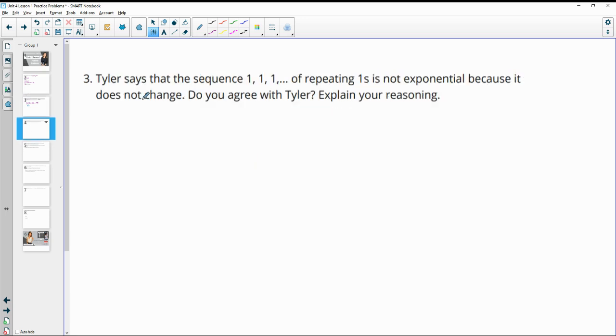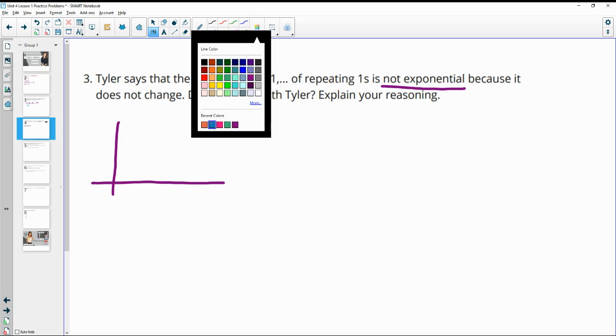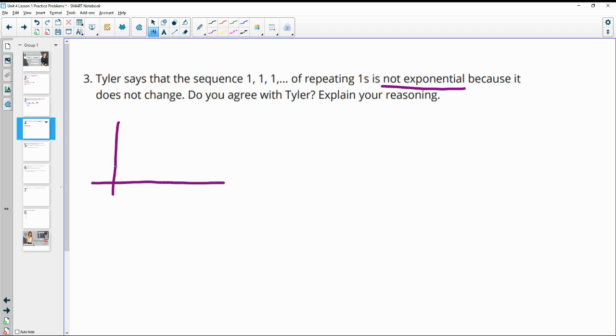Number three: Tyler says the sequence 1, 1, 1 of repeating ones is not exponential because it doesn't change. Do you agree with Tyler? Explain your reasoning. So if we were to look at the graph of this, this means our initial term is 1. After one time period it's 1, after two time periods it's 1, after three time periods it's 1, after four time periods it's 1, and so on. So this one is actually a constant function.